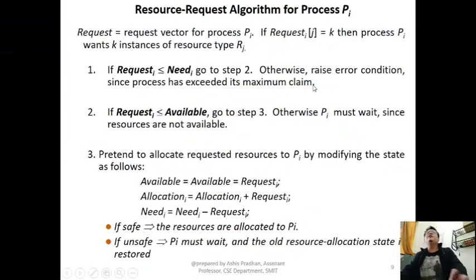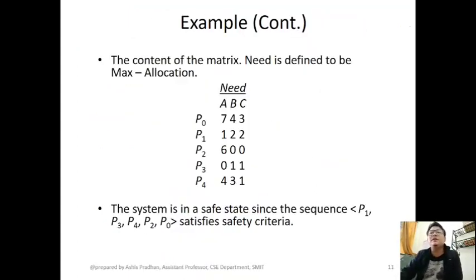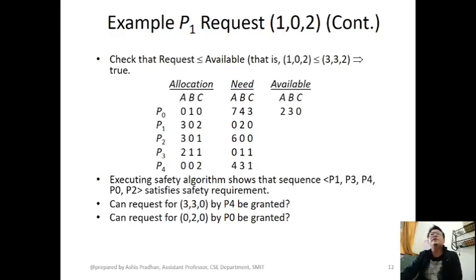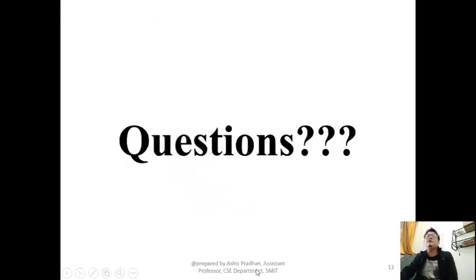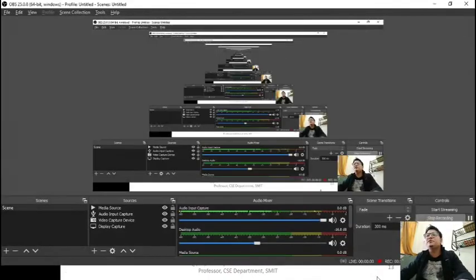To summarize: first calculate the Need matrix (Max − Allocation), then run the safety algorithm to check if the system is in a safe state. Whenever a new resource request arrives, run the resource request algorithm — check Request ≤ Need and Request ≤ Available — then pretend to allocate and re-run the safety algorithm. If safe, grant the request; if not, deny it. You can try this with requests [3,3,0] for P4 and [0,2,0] for P0 as practice.